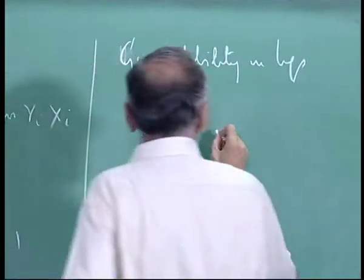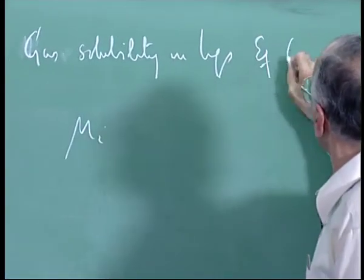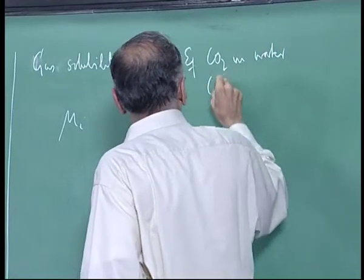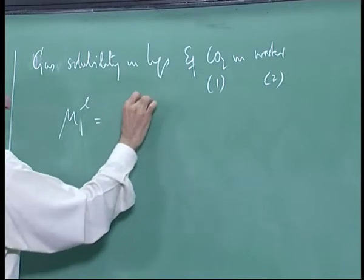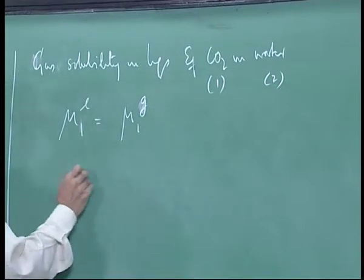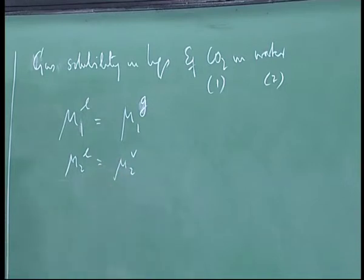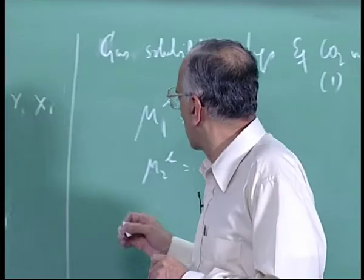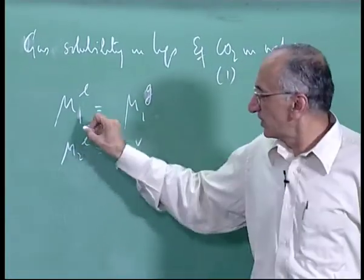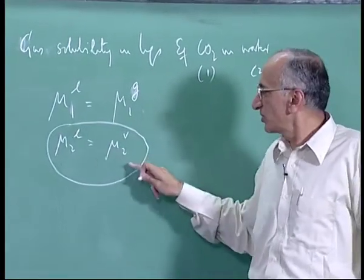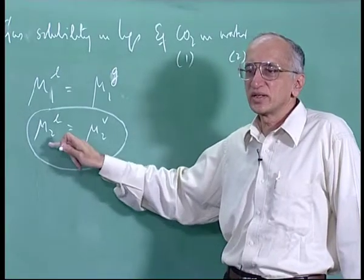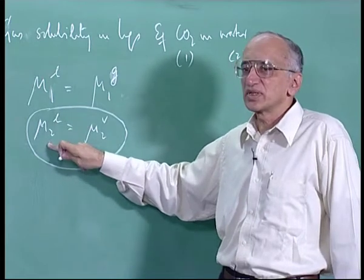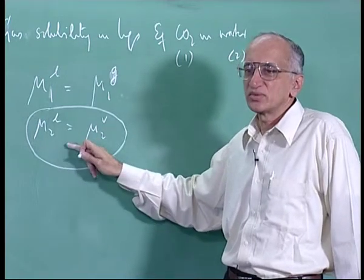Let me take the example of CO2 in water. We will call CO2 component 1 and water component 2. So you have μ_1 liquid phase equals μ_1 vapor phase, and similarly μ_2 liquid phase equals μ_2 vapor phase. For component 2 this is just the vapor-liquid equilibrium problem: μ_2^0 plus RT ln(P y_2 φ_2), which gives the Poynting correction — μ_2^0 plus RT ln of the saturation pressure times the fugacity coefficient times γ_2 x_2.